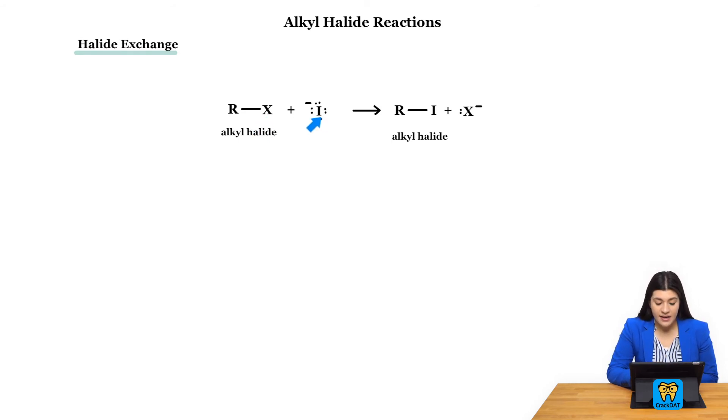Here we have iodide and the iodide ion, and then these are basically going to swap and now we've just formed a completely different alkyl halide.